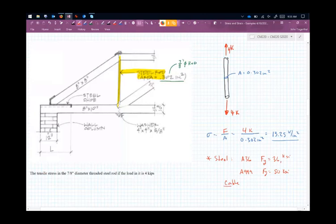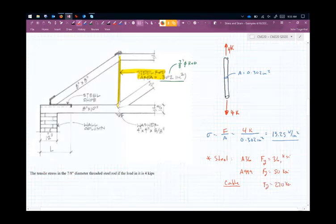And if we had cable, cable like you'd see in a rigging on a crane or something, the yield capacity of that is around 270 ksi.